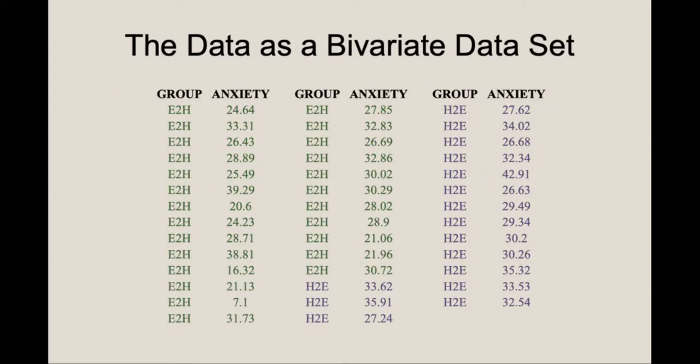First, let's think about the data as a single bivariate data set, which we foreshadowed above. The first variable for each person is their anxiety score, but the second variable will be their experimental group, a dichotomous variable indicating if they were in the E to H or H to E groups.